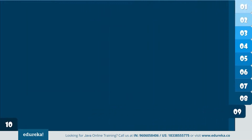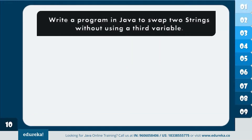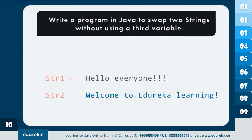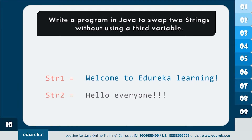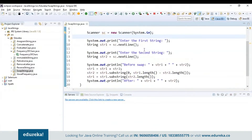Let's move further and understand the ninth program. The question is: write a program in Java to swap two strings without using a third variable — that is, without using a temp variable. I have two strings like 'hello everyone' and 'welcome to Edureka learning.' When I swap, both strings should be swapped. Let's understand the code logic behind this.